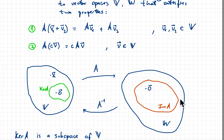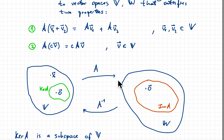The image of A will always contain at least the zero vector, since zero is always mapped onto zero. But it could also be that A covers everything — all of W. So the image of A could be those extremes or anything in between.